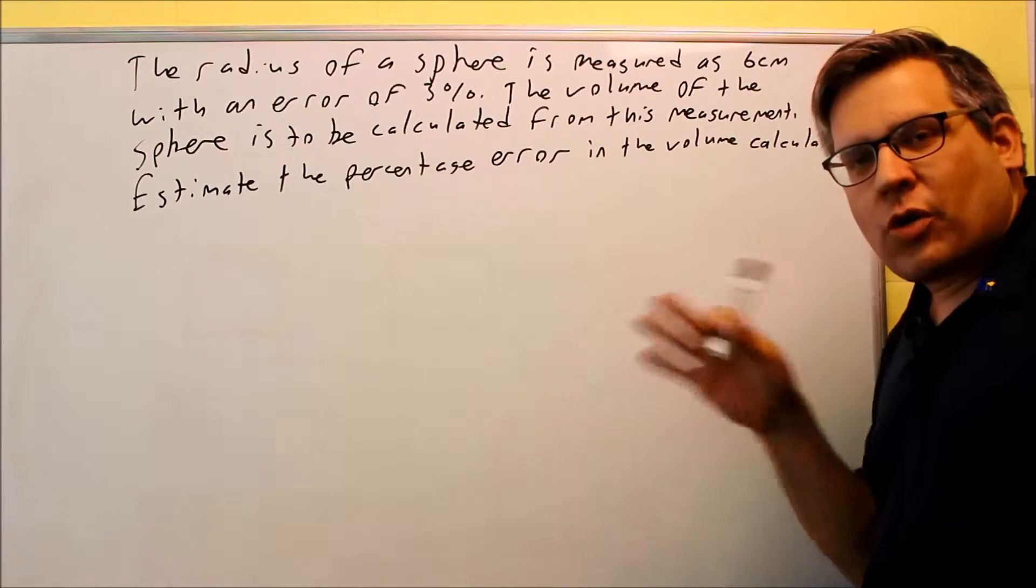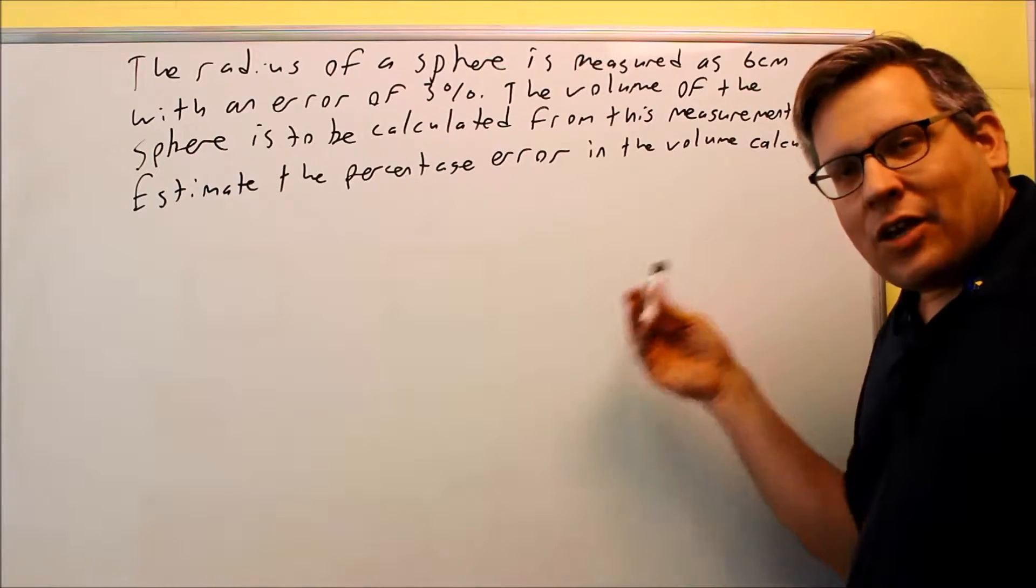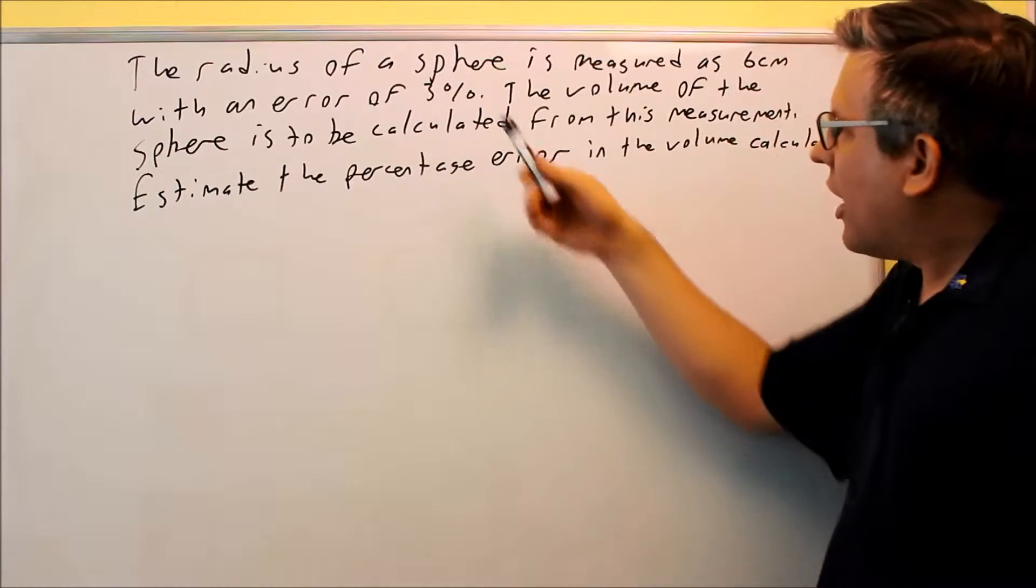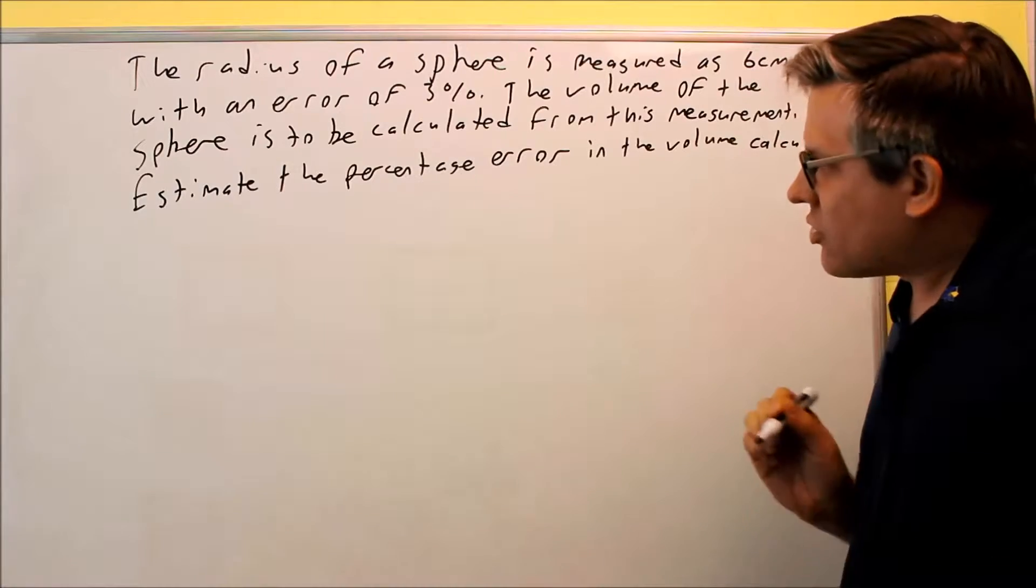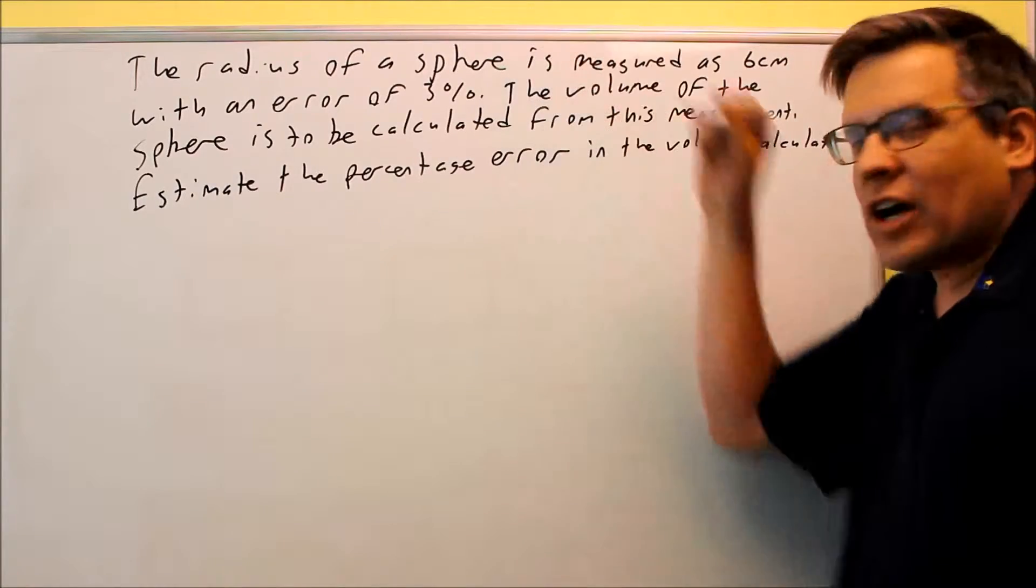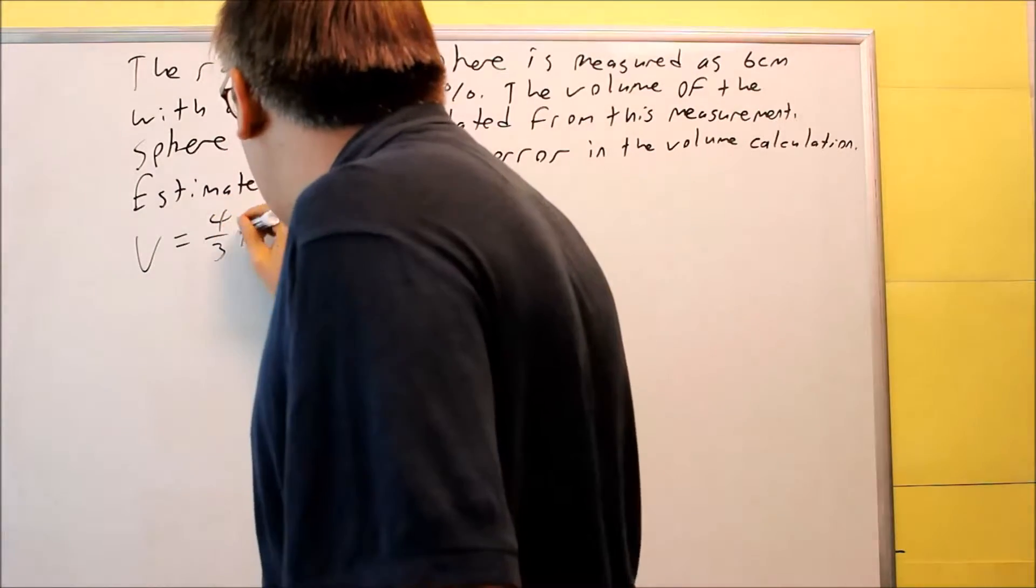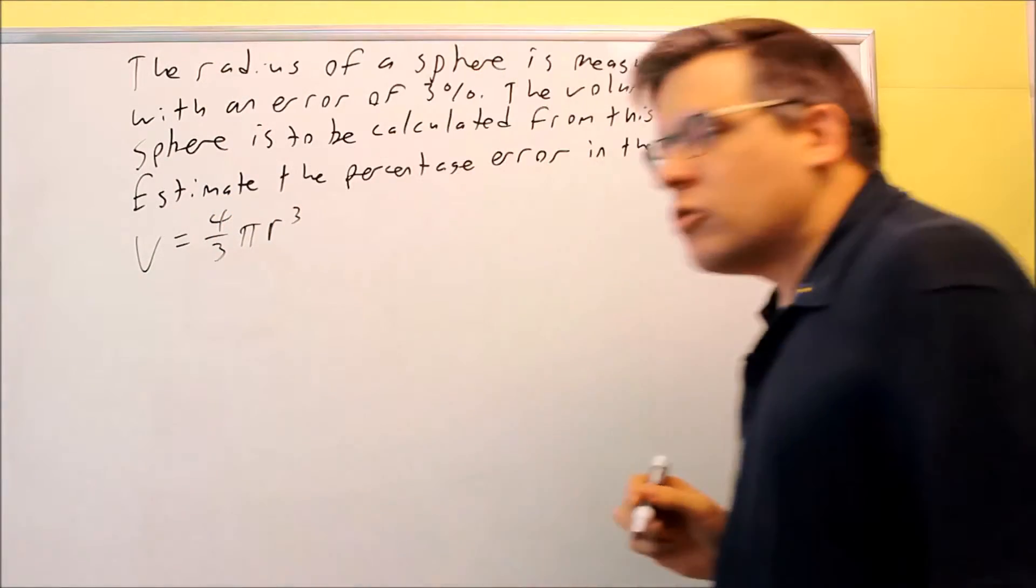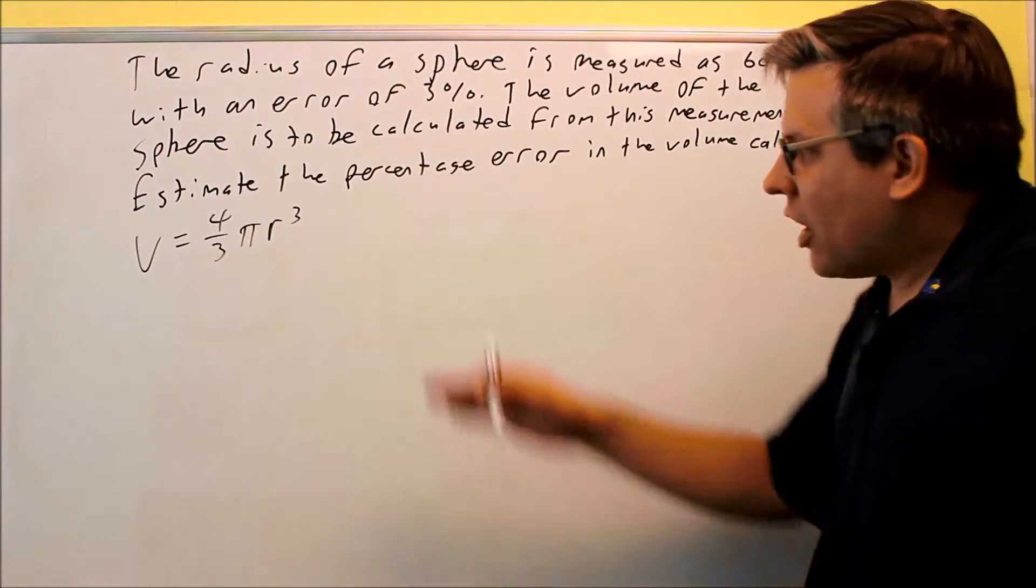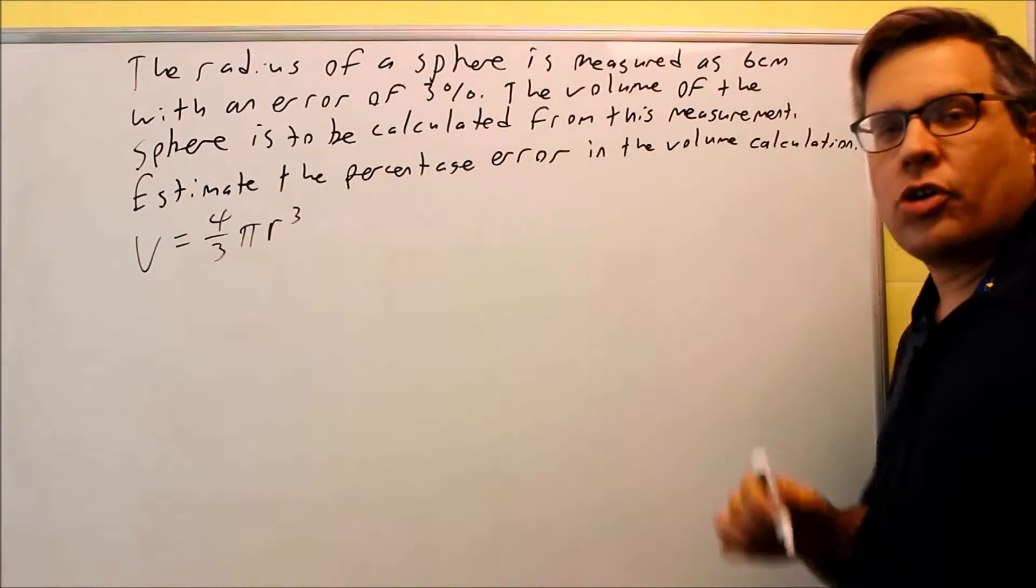Let's see how much we're going to be off if we use the volume with 3%. In order to do that, we have to use the volume of the sphere formula, so that's V equals 4/3 π r cubed. I'll either provide that formula for you or you can look it up.